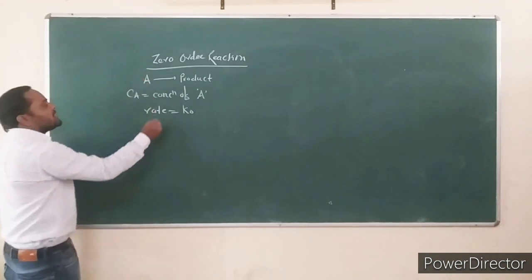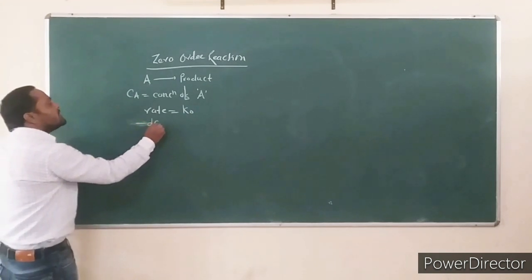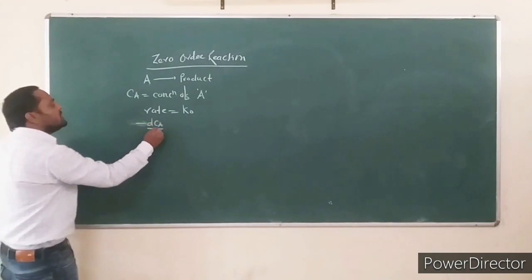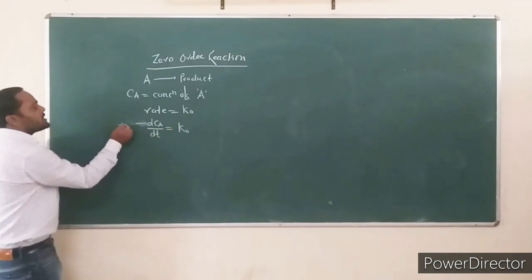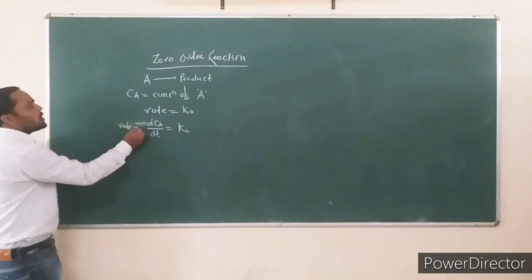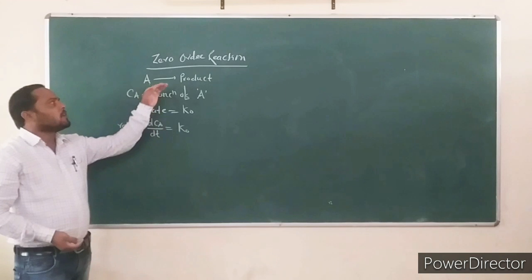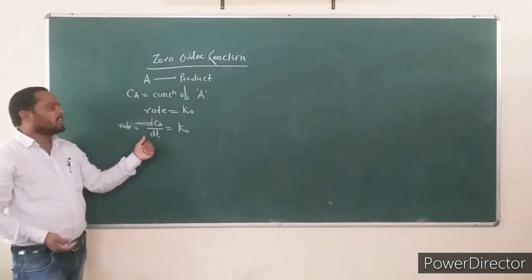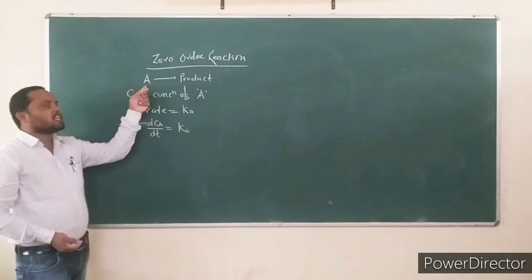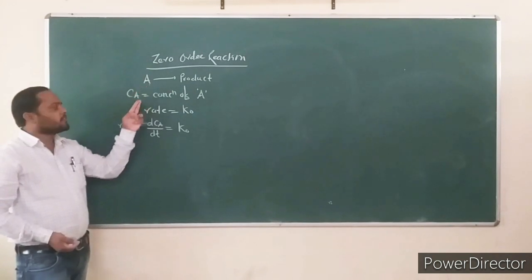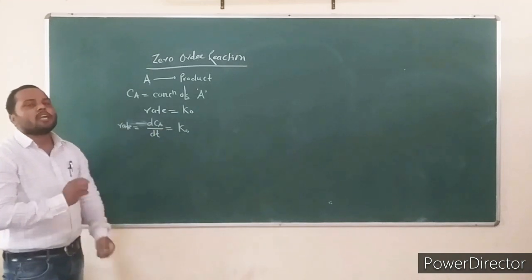For this chemical reaction we can write the rate of reaction in differential form of the rate equation. The rate of reaction is equal to minus DCA upon DT. The decreasing concentration of reactant, minus DCA upon DT, is equal to K0.